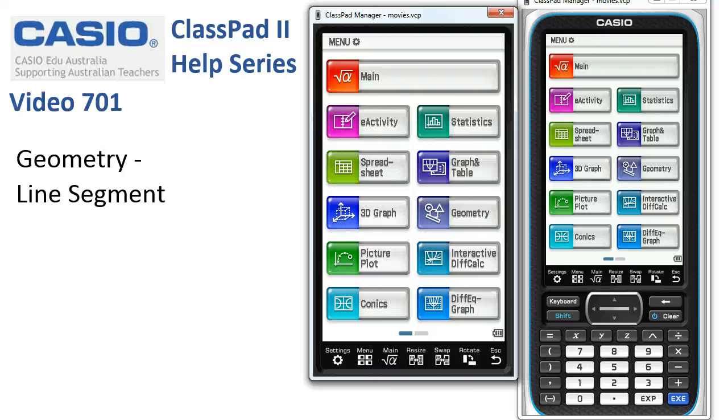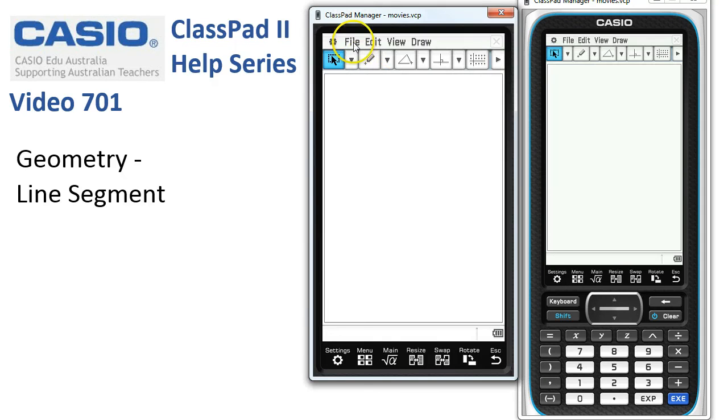Geometry. We'll investigate drawing a line segment. So we'll enter the Geometry app and start as usual with File, New.